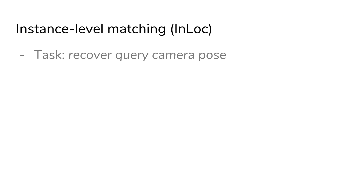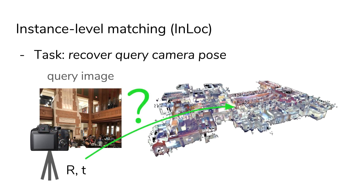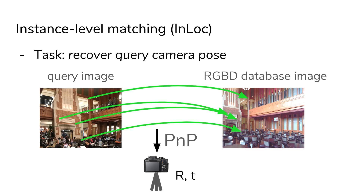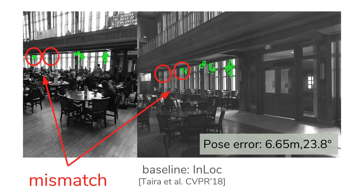We also evaluated the performance of our method on the very different problem of accurate camera localization. Here, given a query image and a known 3D model of a building, the task is to recover the exact position of the camera in the building. For this, pixel-level correspondences are computed between the query and the database image, and then the perspective endpoint algorithm is used to recover the camera pose. We show an example using the baseline approach, that matches every keypoint independently. The repetitive window structures have caused a mismatch, which resulted in a large pose error.